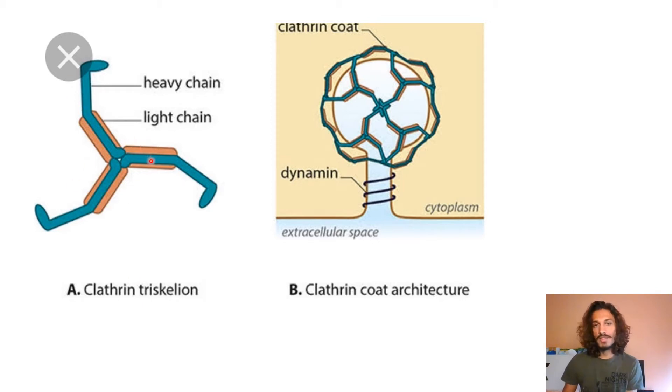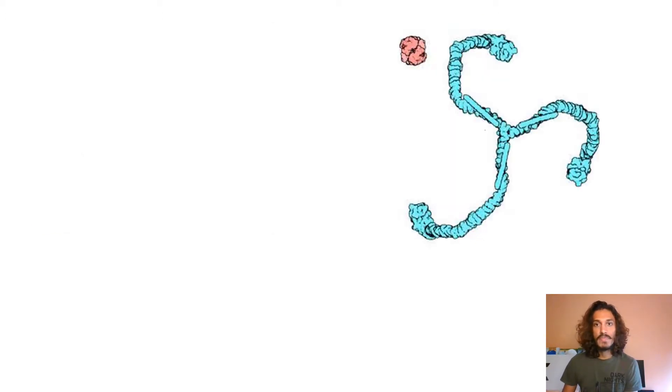This triskelion structure links among itself forming a coat like this, a clathrin coat structure. This is basically what happens, so this again is the clathrin triskelion structure that we're talking about.